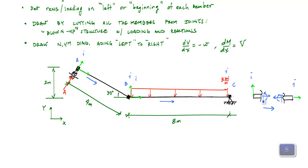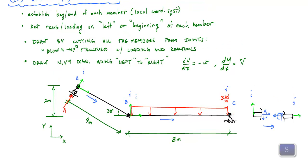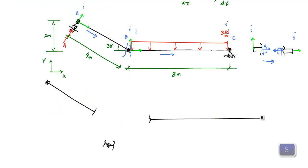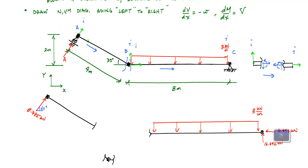Seems like a minor step, but something that's very important and minimizes confusion later on. Now that we've established the beginnings and ends of each member, it's about drawing the reactions and loadings. I like to do both of these things at the same time, where I blow up my structure and draw the things. When I look at this structure, I'm going to cut it right here and cut it right here, just before and just after the connection, so that my drawing will now look like this. Here's my blown-up drawing — I want to make sure I include the loading and draw the reactions with their magnitudes and orientations. I'm going to include what I establish as the beginning and the end of each member.